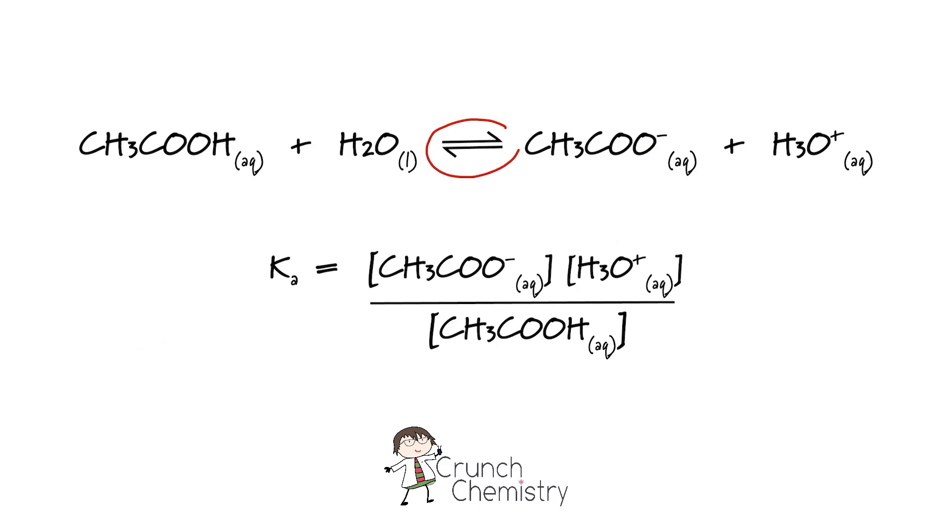The position of this equilibrium is described by the acid dissociation constant Ka which can be determined by dividing the concentration of the products by the concentration of the reactants and we find that when we do this for ethanoic acid the Ka is approximately 1.7 times 10 to the minus 5 mole per decimetre cubed.